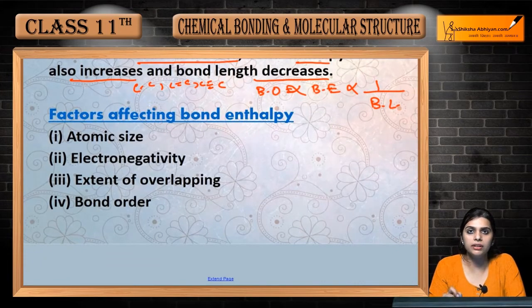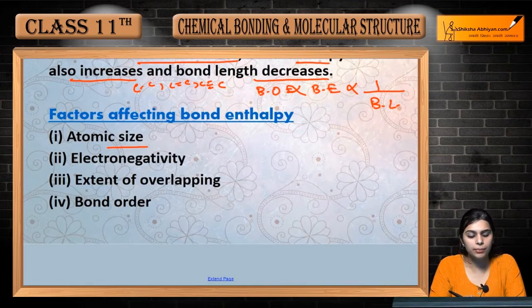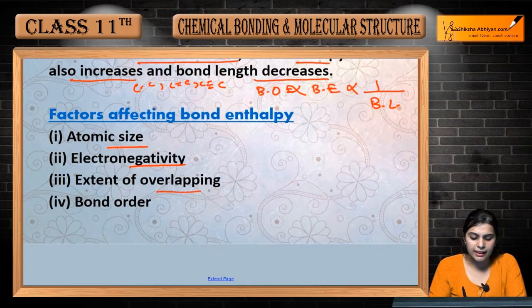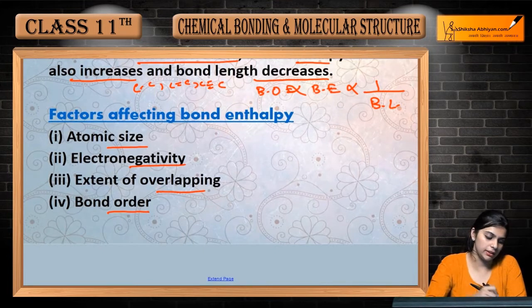Now, factors affecting bond enthalpy — kaunse factors hain jo humari bond enthalpy ko affect karte hain? Atomic size — jitna bada size hoga utni kam bond enthalpy hogi. Electronegativity, extent of overlapping, and bond orders — yeh humari kuch factors hain jis par humari bond enthalpy depend karti hai.